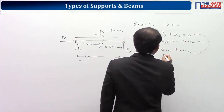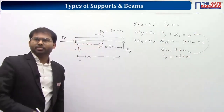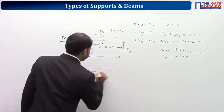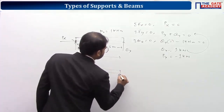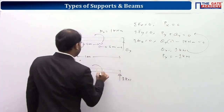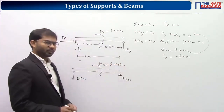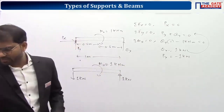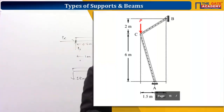Py is negative — the arbitrary direction we took is wrong. The correct representation: Py acts downward (1 kN), Qy acts upward (1 kN), and we have a clockwise moment M0 of 1 kN·m. This is the first step — I hope everybody got the answer. It is a very simple question.